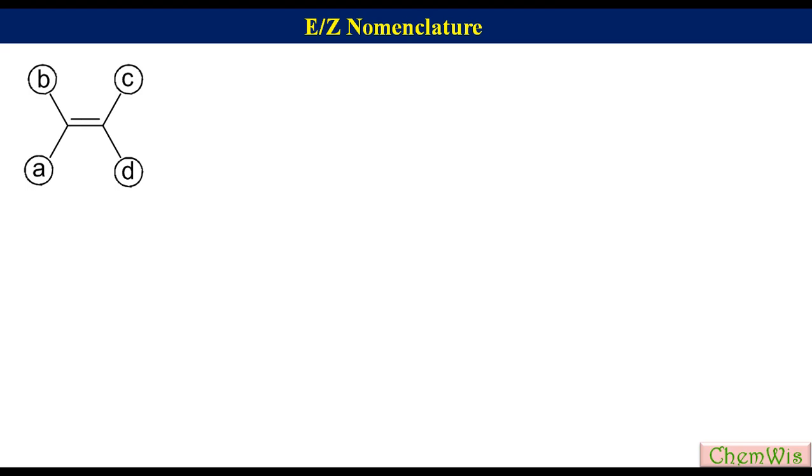This alkene can have E/Z configuration only when A is not equal to B and C is not equal to D.